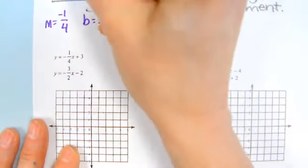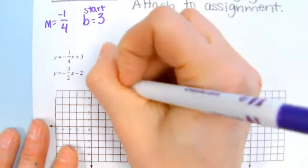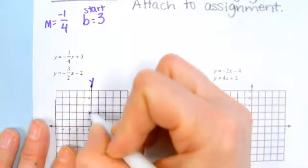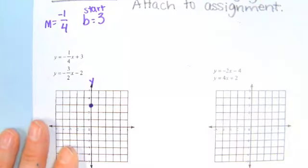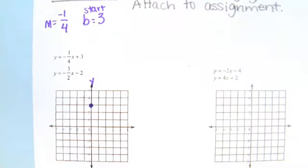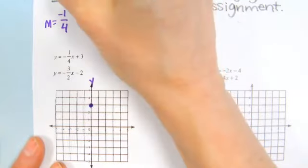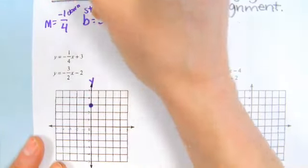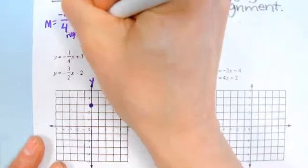That one's a free point. We're going to start by putting three on the y-axis. We're going to start, go to the y-axis, go to three, and mark a dot. Then we're going to use the slope to tell us where to go from that three. Since that's negative one, that means we're going to go down one, and positive four means right four.